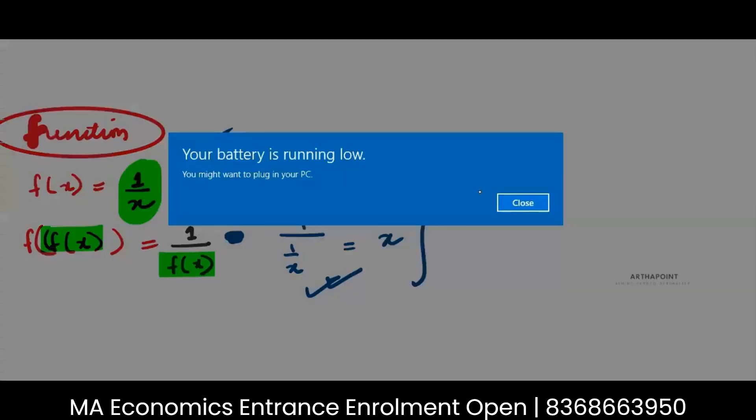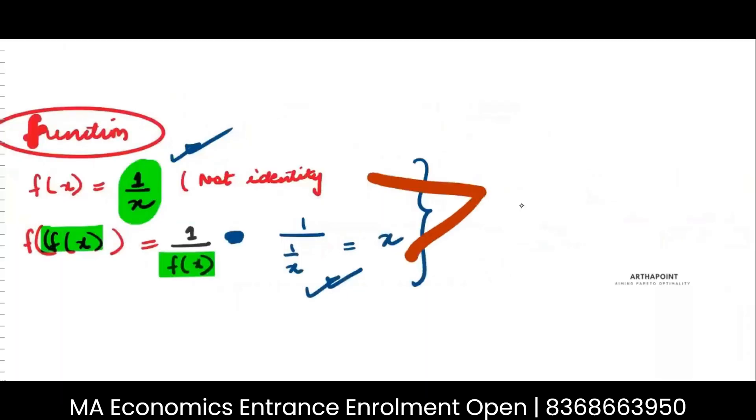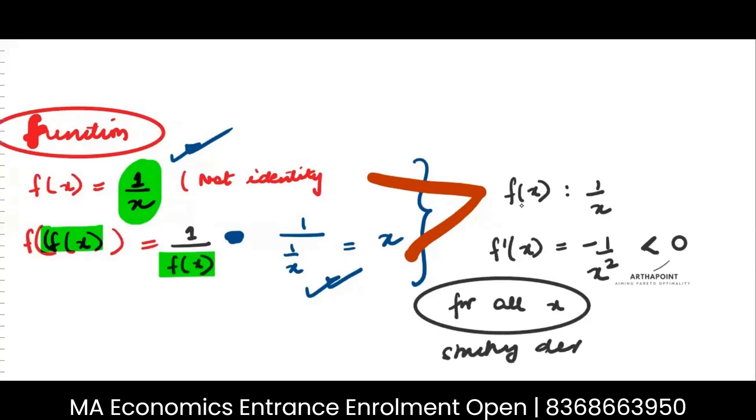Now, based on these two, what I can go ahead and do is I can find whether this function f of x is increasing or decreasing. So if my f of x is 1 by x, I clearly know f dash x will be minus 1 by x square, which is less than 0 for all x. Whether x is negative or positive, it is always less than 0, which means it is a strictly decreasing function.